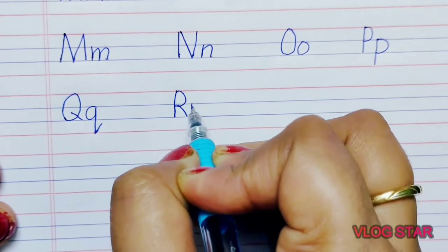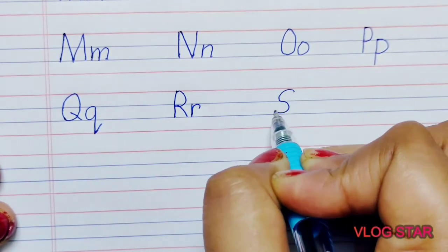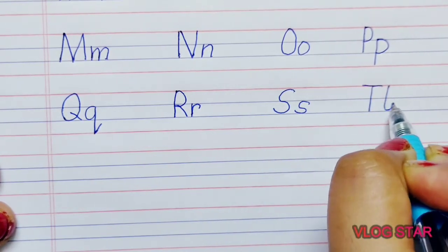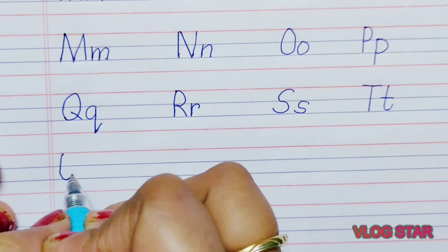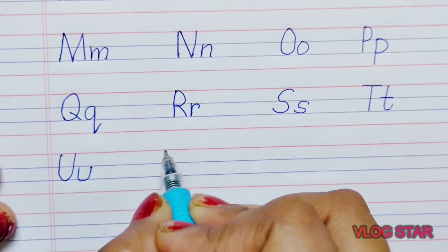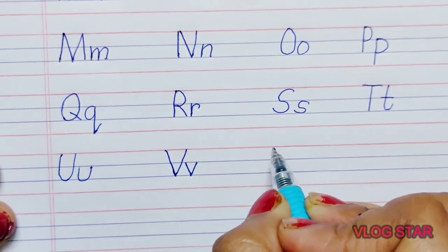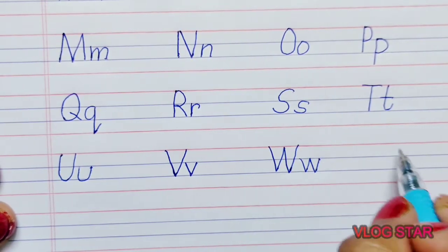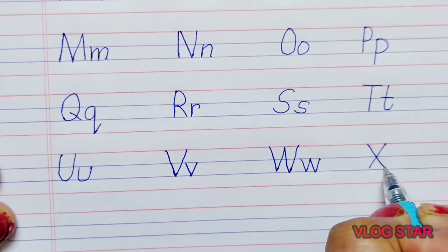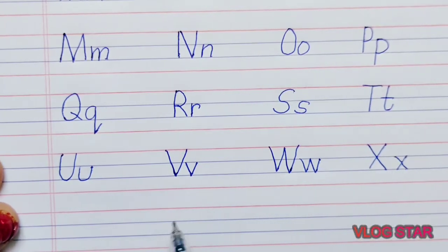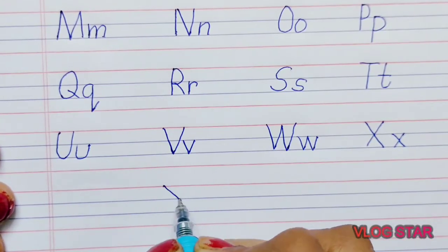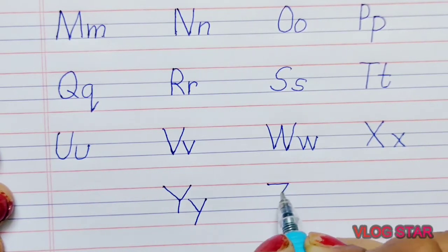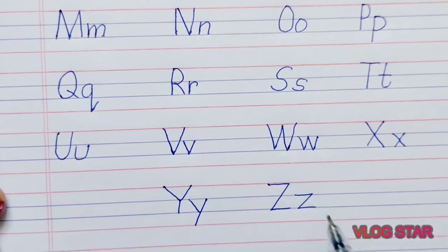R, R for rabbit. S, S for sun. T, T for tiger. U, U for umbrella. V, V for van. W, W for watch. X, X for Christmas tree. Y, Y for yak. Z, Z for zebra. Bye bye.